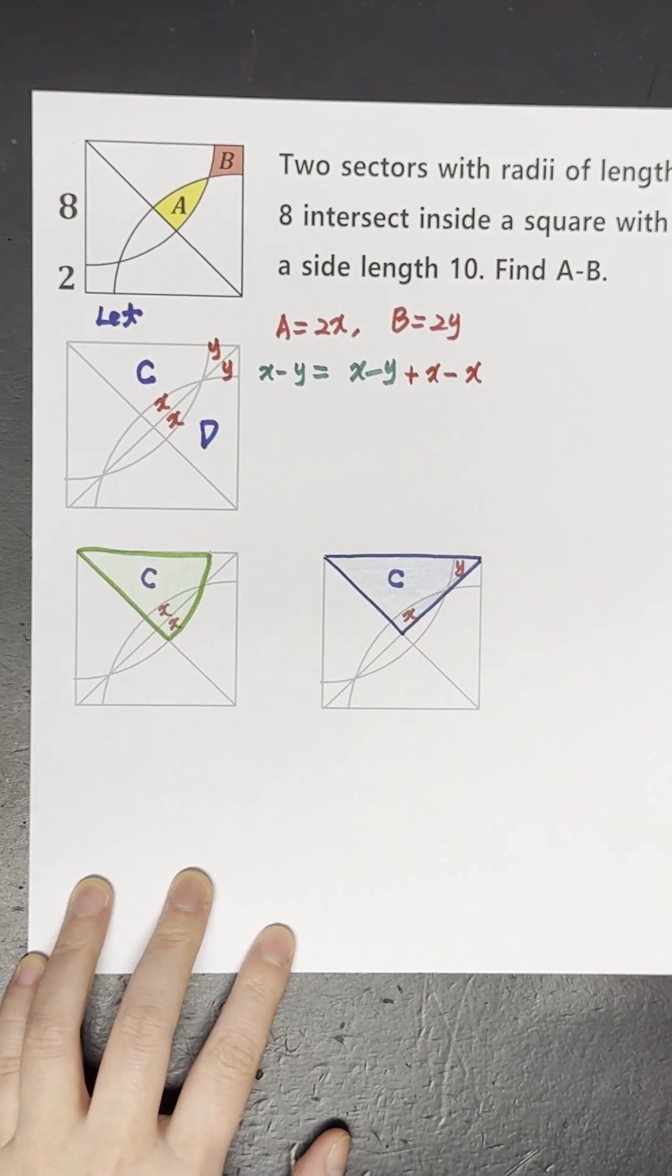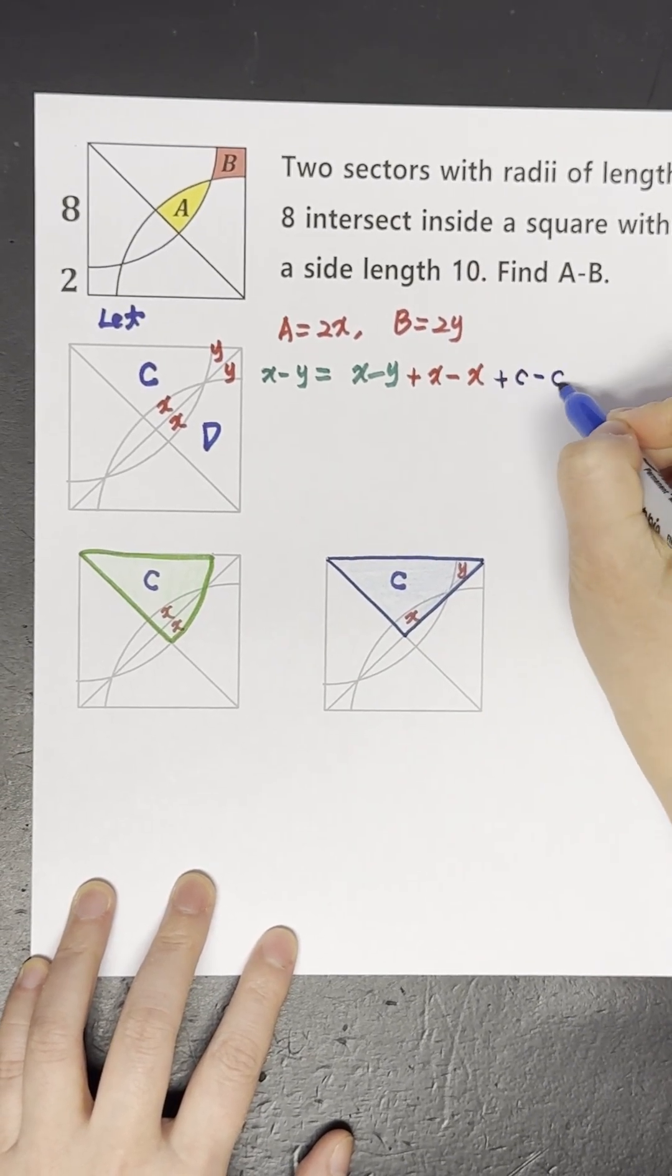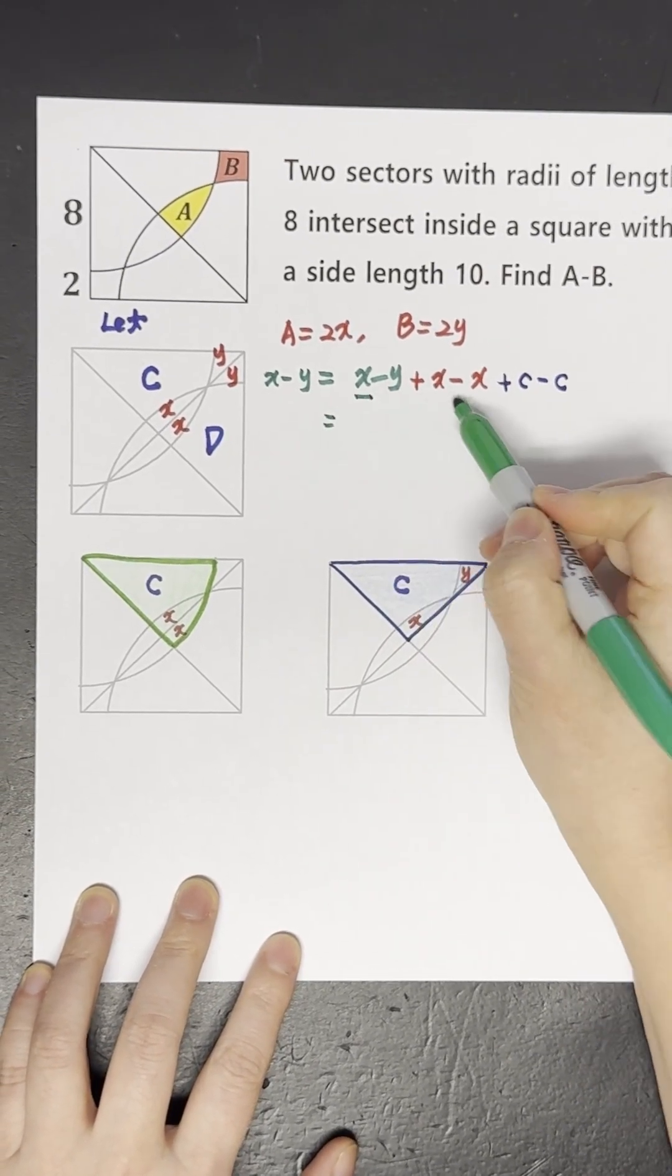If we add a variable, we must subtract that same variable to make the equation the same. Then we'll group.